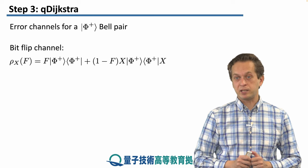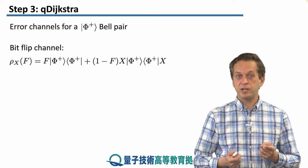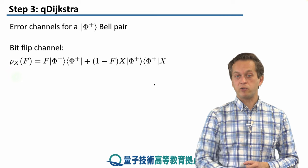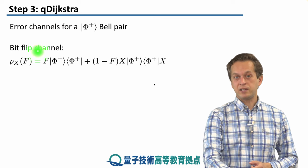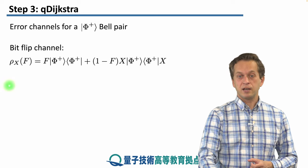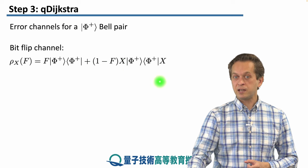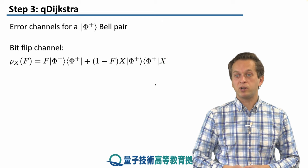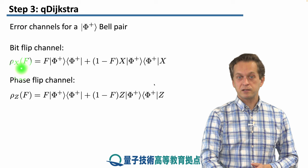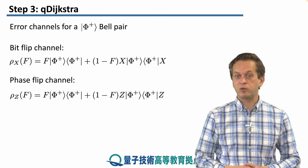Let's say our ideal state is the phi-plus Bell pair, an equal superposition of |00⟩ and |11⟩. We consider two types of error channels. The first is a bit flip: we denote such a state as rho_x, where the parameter f is the fidelity, the probability that the state is the ideal state phi-plus. The state can be written as phi-plus with probability f, and the erroneous state with Pauli X applied with probability 1 minus f. Similarly, we consider the phase flip channel, replacing X with a Pauli Z matrix, applying a phase error to phi-plus with probability 1 minus f.